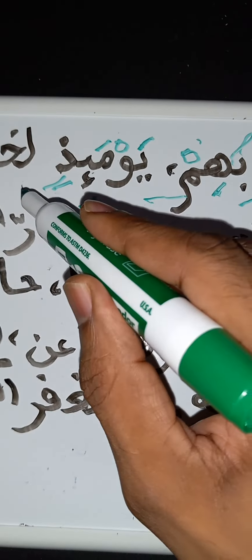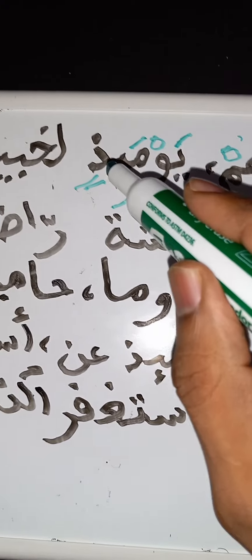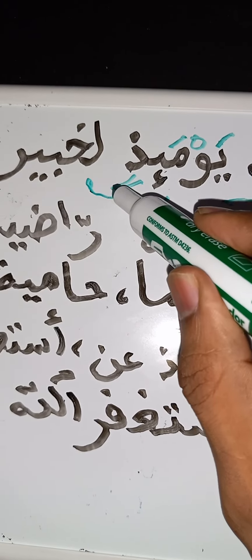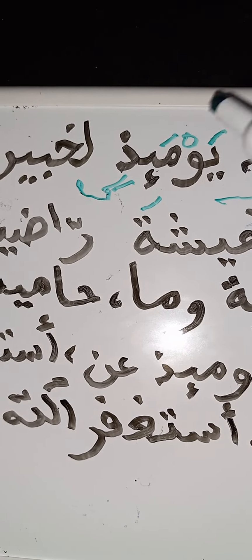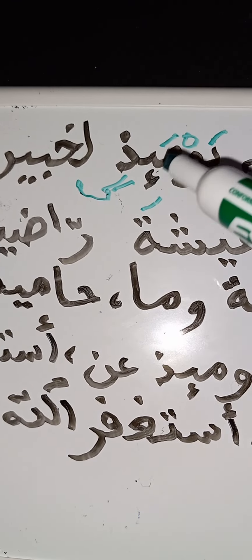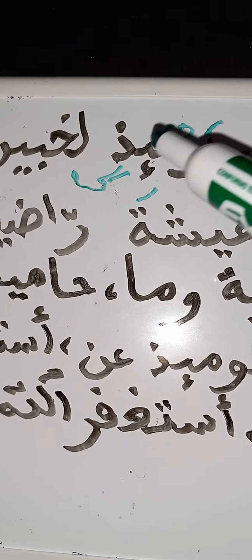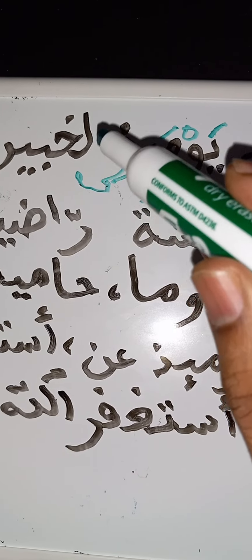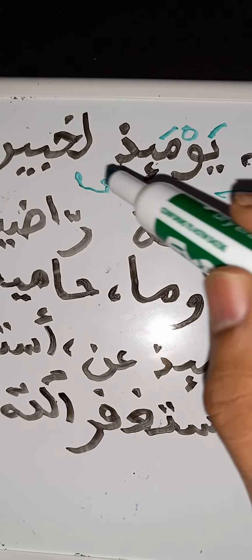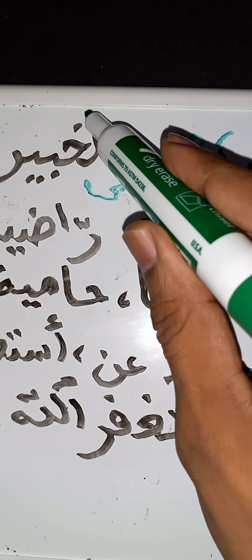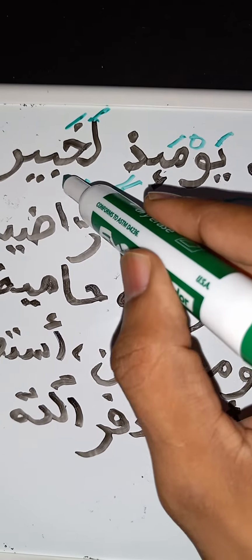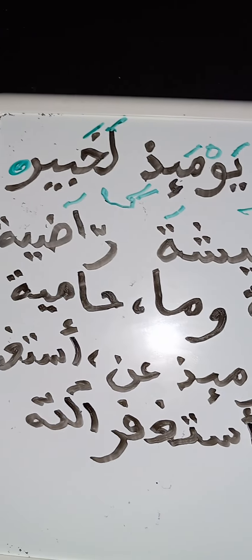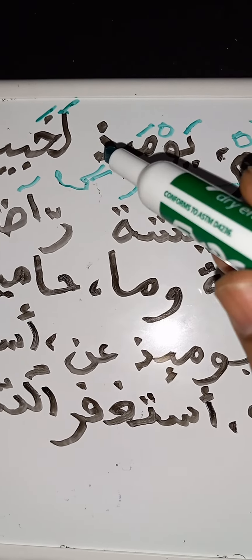How about this right here — where you have kasratayni, so this is tanwin, which is the partner of the noon usakin. Lam came after it, therefore this changes into idgham without gunna — no nasal in this particular idgham — because remember the idgham of noon usakin and tanwin has a subcategory: two letters that do not nasal in 'yarmaluna,' which are lam and ra. So 'yawma idhin la khabir' — lam fatha, ha fatha, ba kasra, ya stretching it, then ra with a sukun: 'la khabir.'